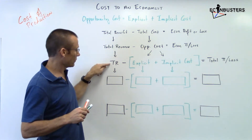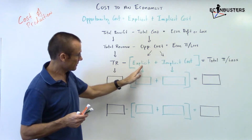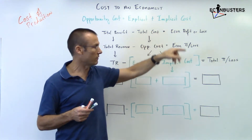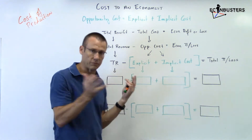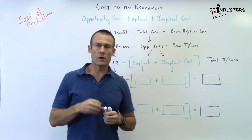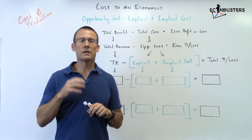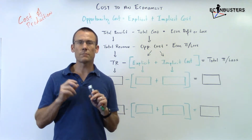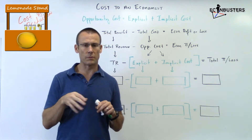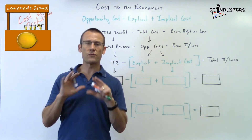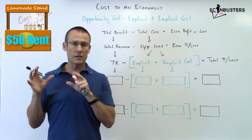Breaking it down: Total Revenue (TR) minus opportunity cost — that is, the explicit plus the implicit cost — equals the profit or loss. Now we've got to fill this in, and to do this I'm going to tell you a story. Here's the situation: Lisa is thinking about opening up a lemonade stand. In her town there's actually a lemonade rental company.